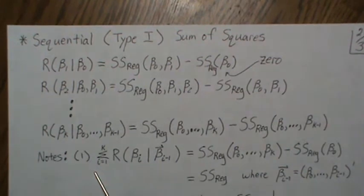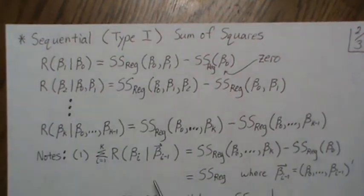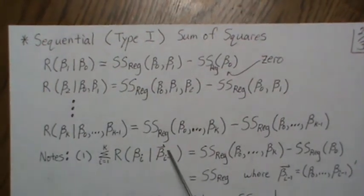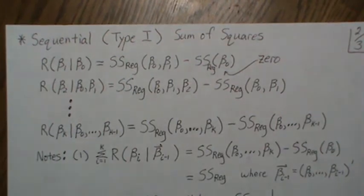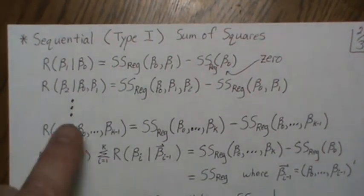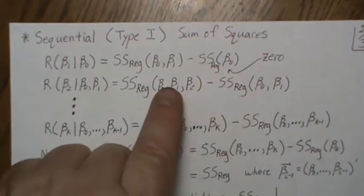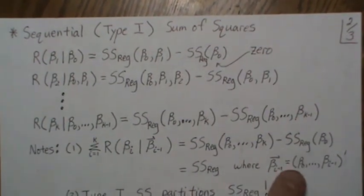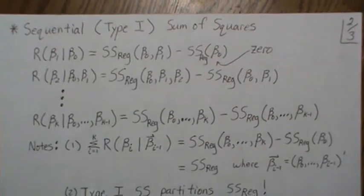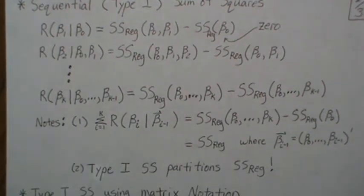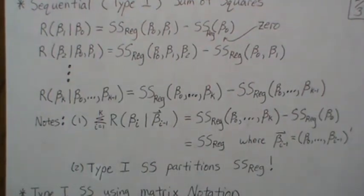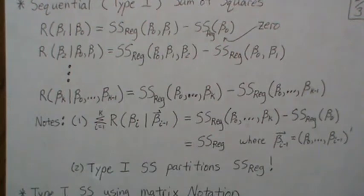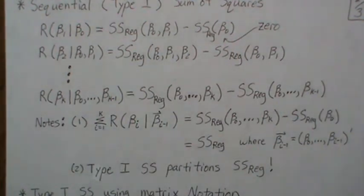A note: if we add these Type 1 sums of squares up — using the notation where βᵢ is a single beta parameter and β̄ᵢ₋₁ means all the previous beta parameters — this sum telescopes: terms cancel pairwise, and since SS_R(β₀) is zero, what remains is the SS regression with all parameters. So when we add them all up, we get the sum of squares regression. This means the Type 1 sums of squares partitions the sum of squares regression — we partition SST into SSR and SSE, and then we take SSR and partition it into these k Type 1 sums of squares, which is quite interesting.